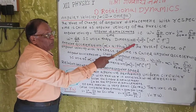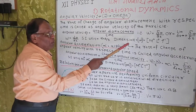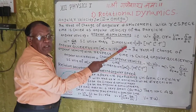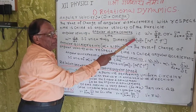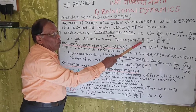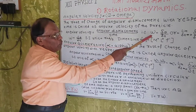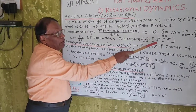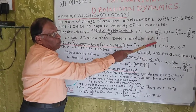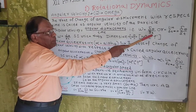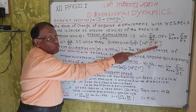The dimensional equation of angular velocity is: [omega] equals [M to the power 0, L to the power 0, T to the power minus 1].